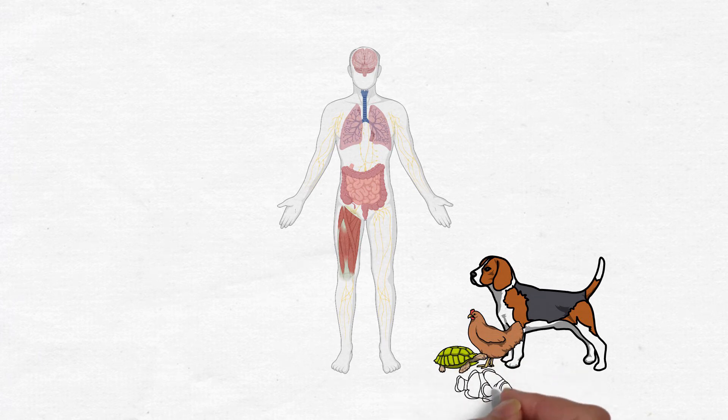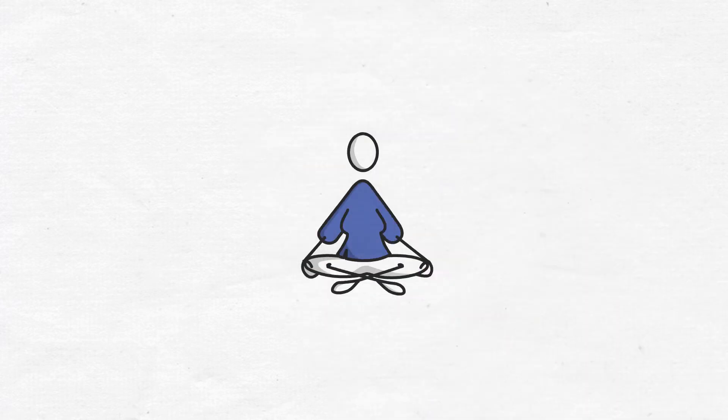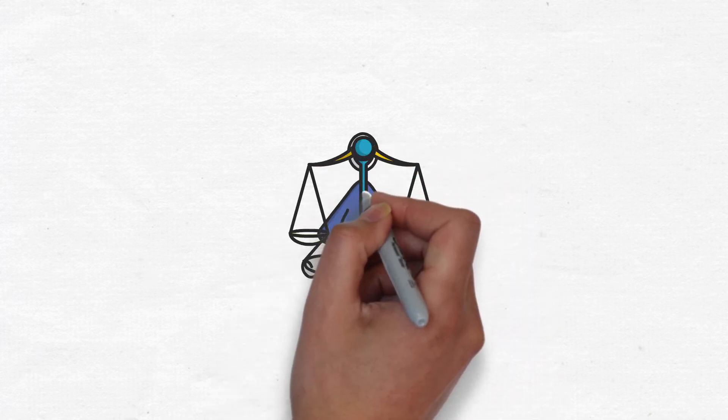The endocannabinoid system is a body signaling network that promotes and maintains homeostasis.